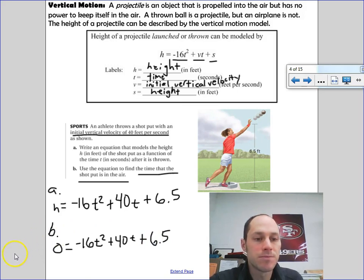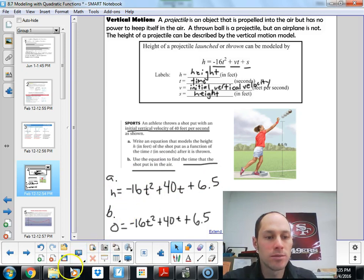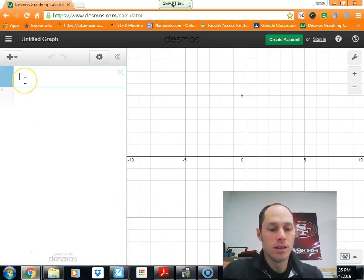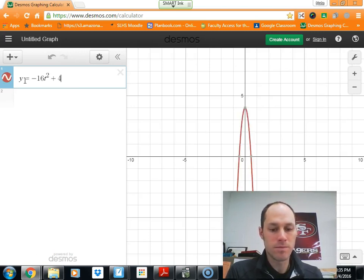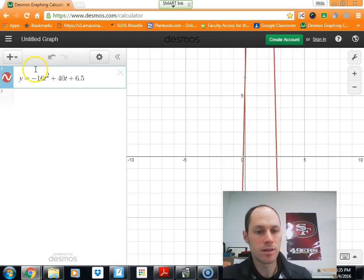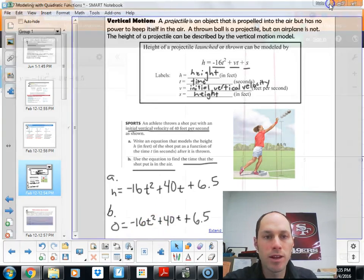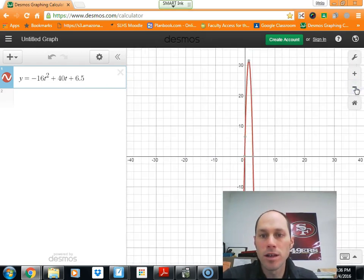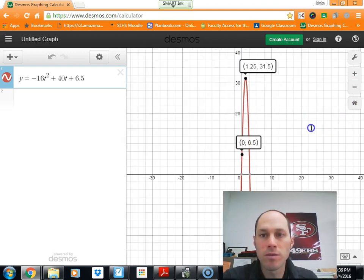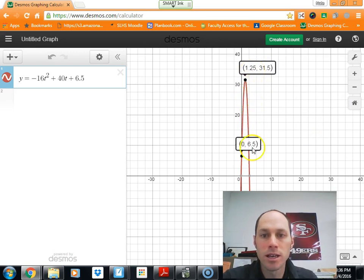I'm going to go on to Desmos and enter my equation into my graphing calculator. So y equals negative 16t squared plus 40t plus 6.5 was our equation. And then once I have that equation, I'm going to take a look at what I have. As we model this equation, this is our initial height, our y-intercept. Shot put goes up in the air, reaches a maximum of 31 feet at 1.25 seconds.